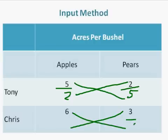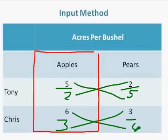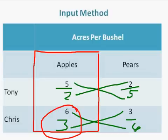We'll do that math, and then again when you finish, you're going to look in the columns for the lowest opportunity cost. So 5/2nds or 6/3rds — 6/3rds is the lower number, it's 2, and 5/2nds would be 2 and a half. For pears, 2/5ths is smaller than 3/6ths. So Tony should produce pears because he only gives up 2/5ths of an apple, and Chris should produce apples because he gives up 6/3rds of a pear.